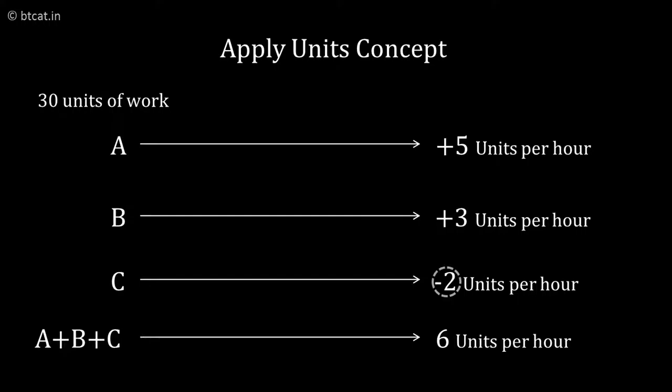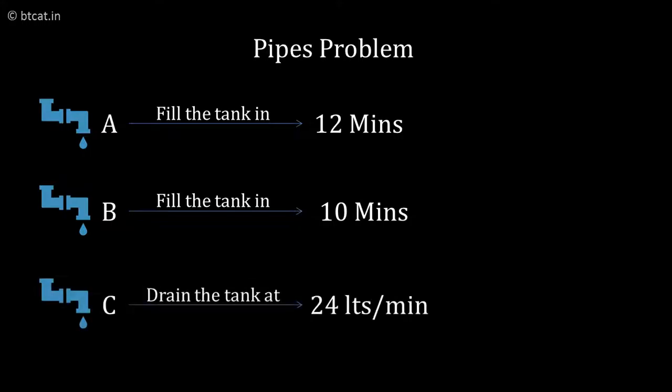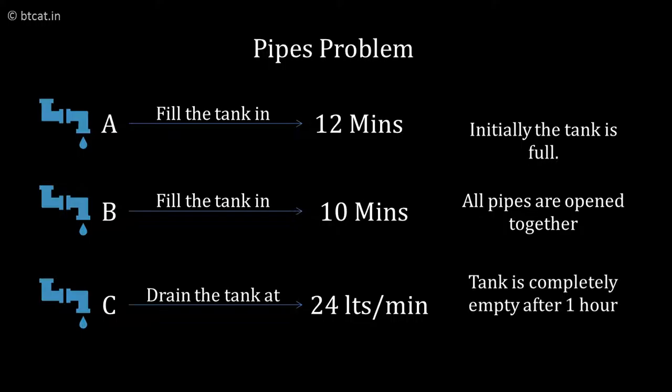Let us take one problem which has come in the CAT exam as well. Pipe A can fill the tank in 12 minutes, pipe B in 10 minutes, while pipe C can remove water at the rate of 24 liters per minute. Initially, the tank is full. All three pipes are opened together and in exactly one hour, the tank gets empty. The question is: what is the capacity of the tank?